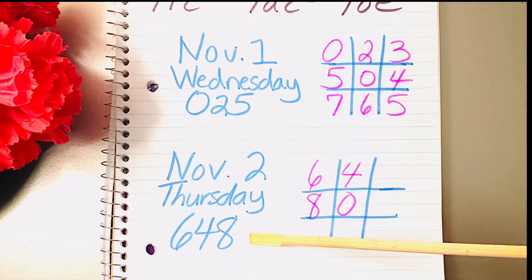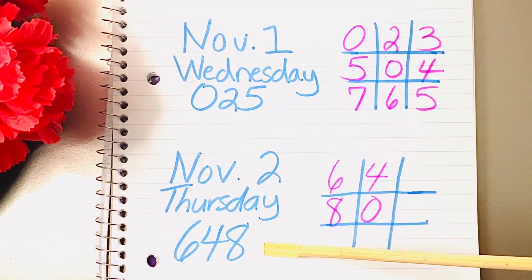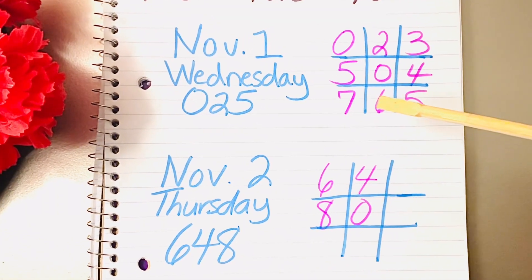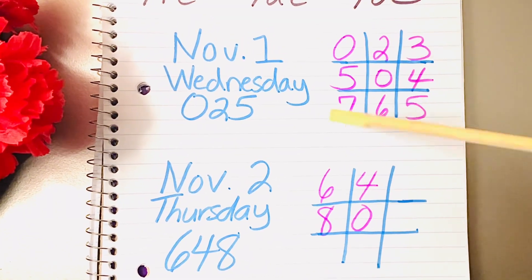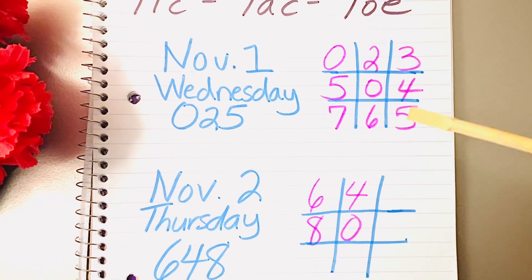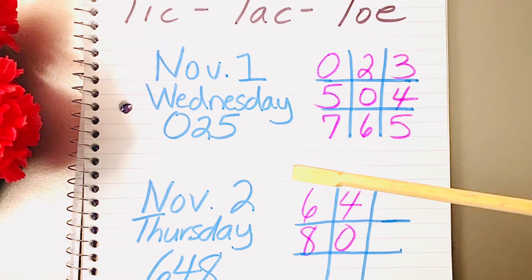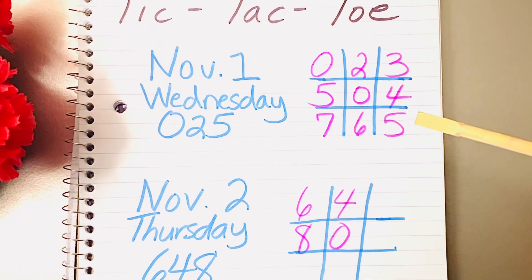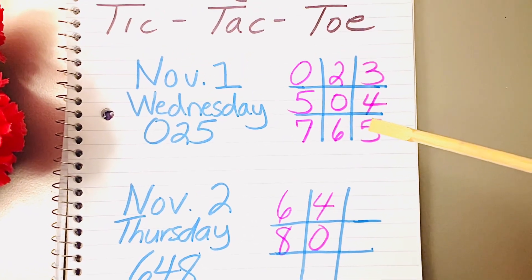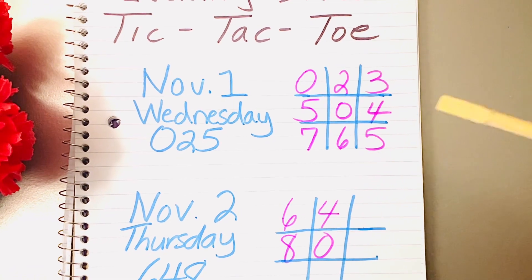So 648 failed Thursday evening in California draw. And if you look at the November 1st tic-tac-toe grid, you do not see 648. So it was not clear that this number was going to fall. So it did not work this time.